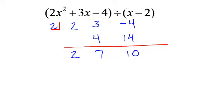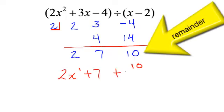So how do I write my answer? It will be 2x to the first plus 7 plus, how do I write that remainder? It will be 10 over x minus 2.